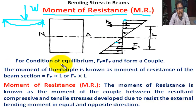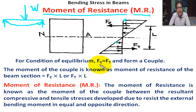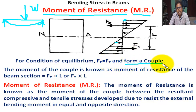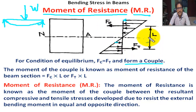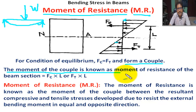For the condition of equilibrium, the beam is in equilibrium. Then the resultant compressive force Fc equals the resultant tensile force Ft, and they form a couple. The value of a couple is any one of the forces multiplied by the distance. The moment of this couple is known as the moment of resistance of the beam section.